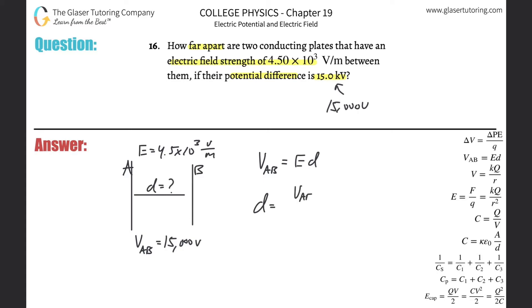In other words, it's going to be the 15,000 all divided by that 4.5 times 10 to the third. And what do we get?